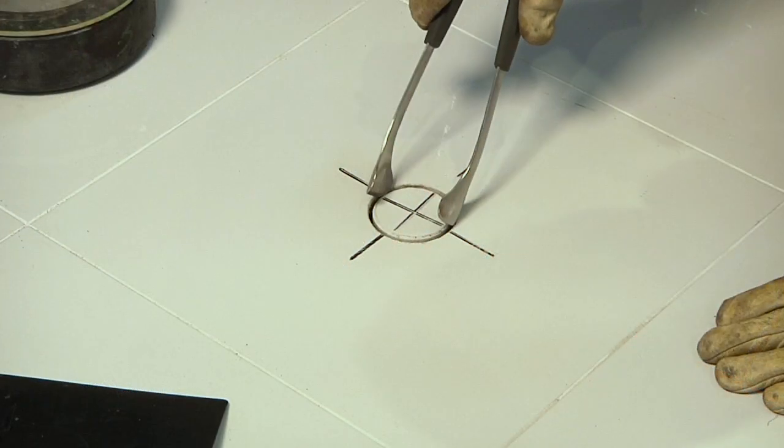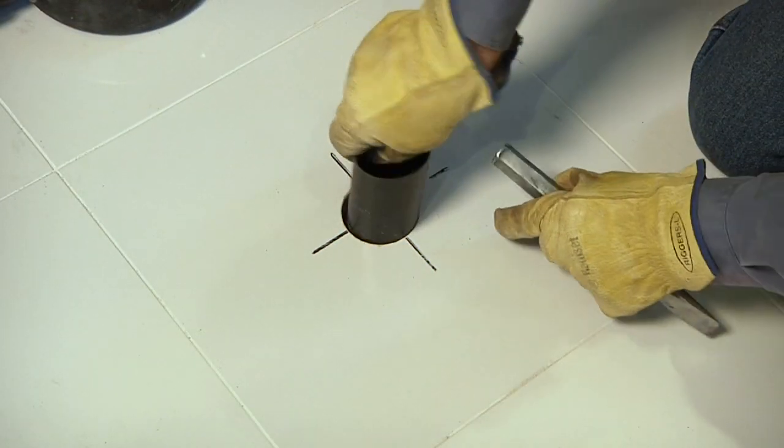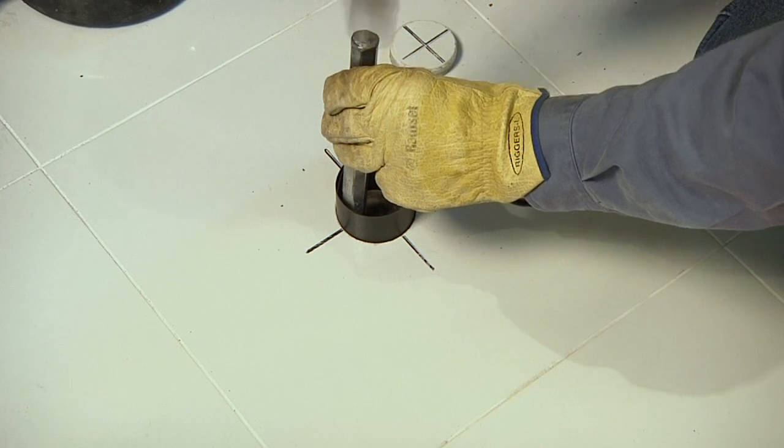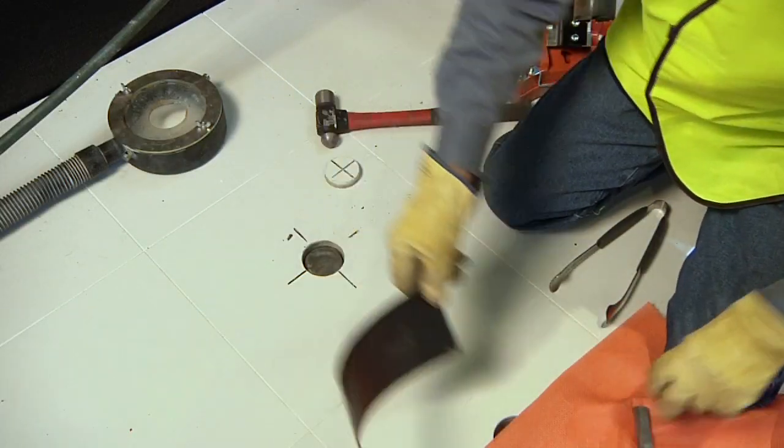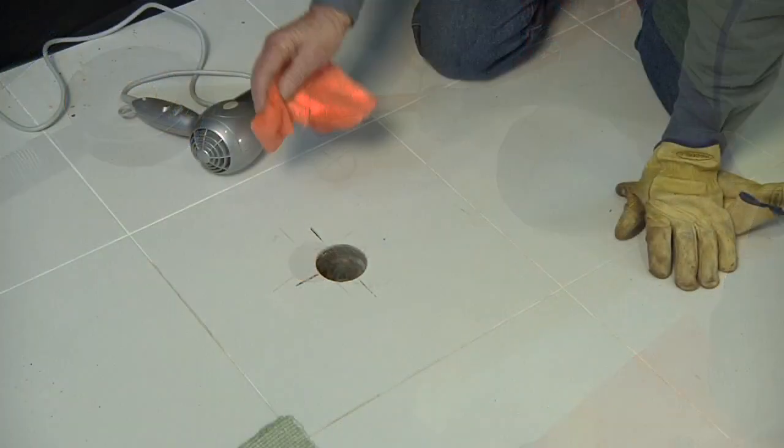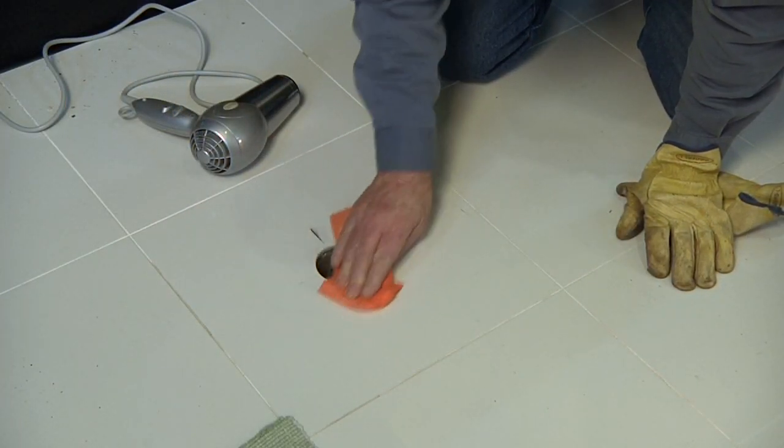A protective sleeve is inserted into the cut and the core is snapped at its base with a curved chisel, ensuring the cored floor edge is well protected. The core is extracted and the hole cleaned and dried and the grid marks removed.